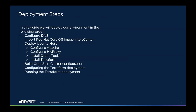A quick overview of the high-level steps. We're going to configure the DNS and set those strict requirements for DNS records in place. We're going to bring down a Red Hat CoreOS image into vCenter. We're going to deploy the Ubuntu host, configure the Apache and load balancing services and the tools we need. Then we'll get into the meat of it where we build the OpenShift cluster configuration, and then configure and deploy the Terraform scripts to build the environment itself.